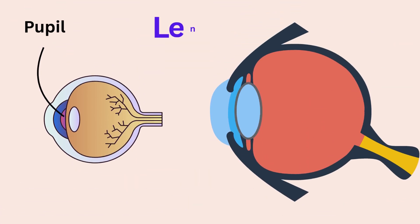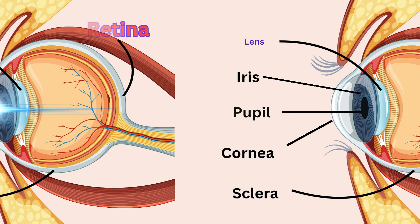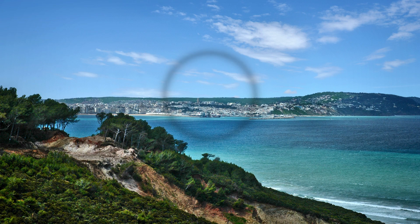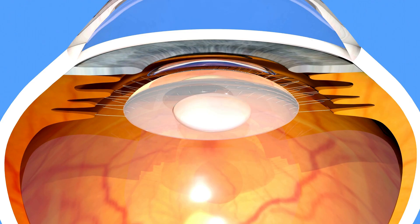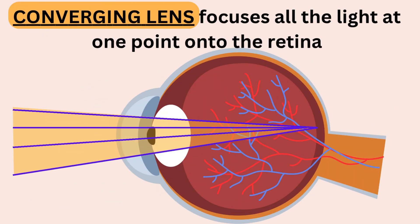At the back of the pupil there's the lens of the eye. The lens is a flexible structure that fine-tunes focus by sending light to the retina at the back. The lens is held by two muscles called ciliary muscles, which help the lens change shape to see things that are far away or really close. The eye lens is a biconvex lens, thicker at the center than the edges — a converging lens that focuses all the light at one point onto the retina.